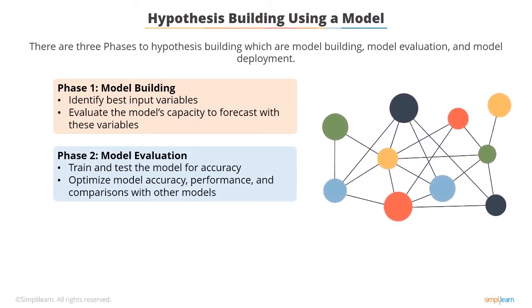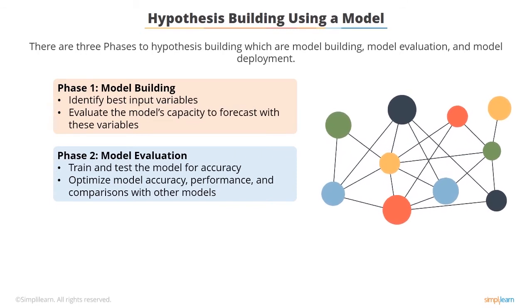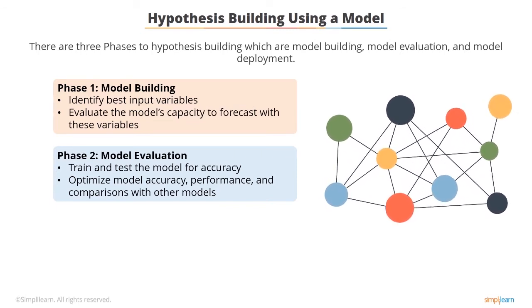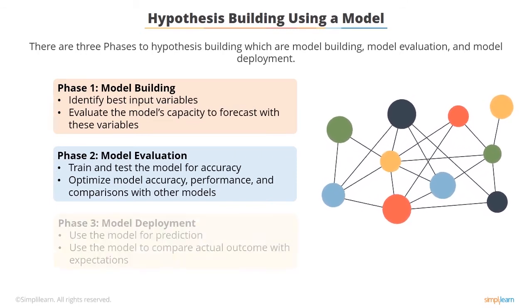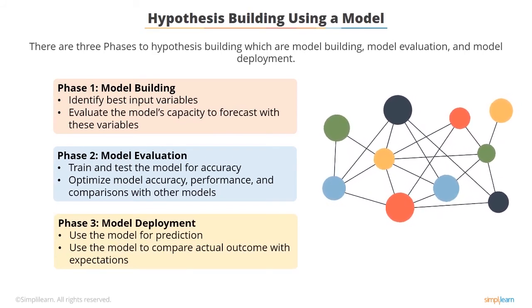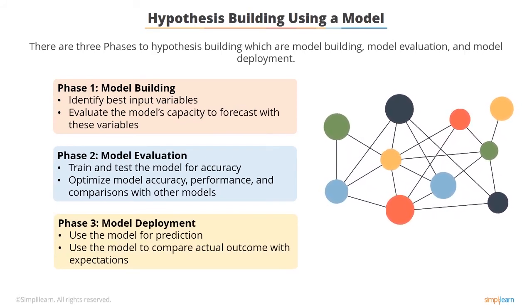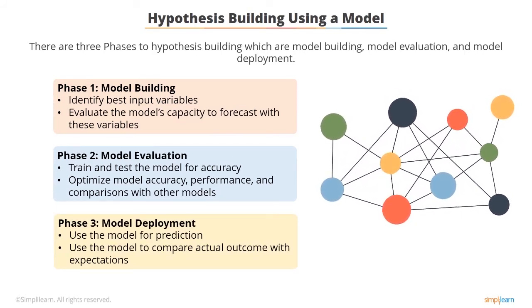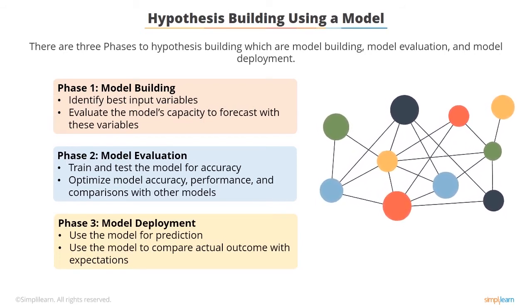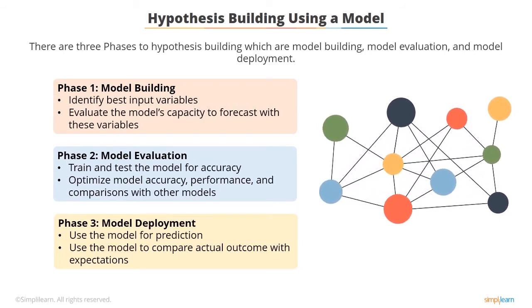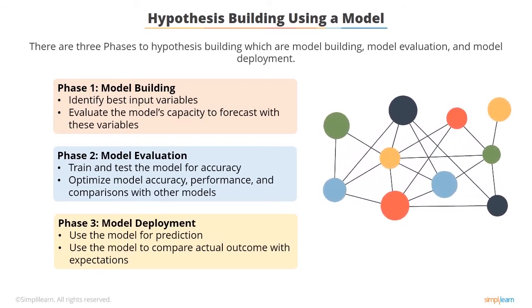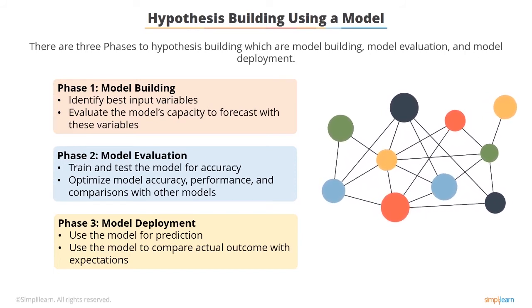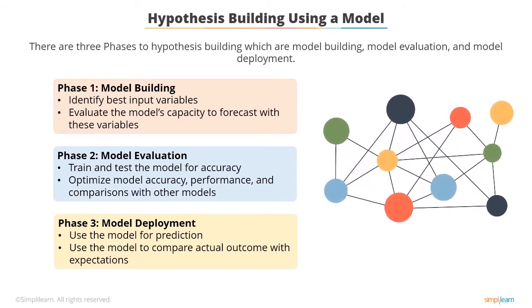Model evaluation is also the phase where performance is optimized for model accuracy, model performance, and model comparisons. The third phase is model deployment — in this phase you have finished selecting the model you will use to solve the business problem. The output of the model will help you take better decisions through model prediction, where the model matching or actual outcome meets the expectations.